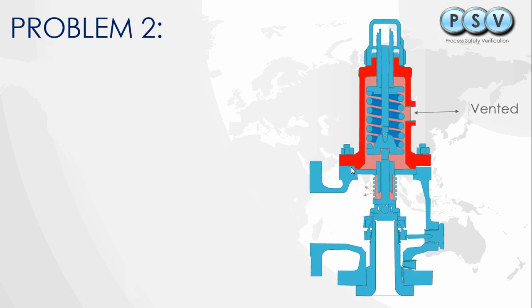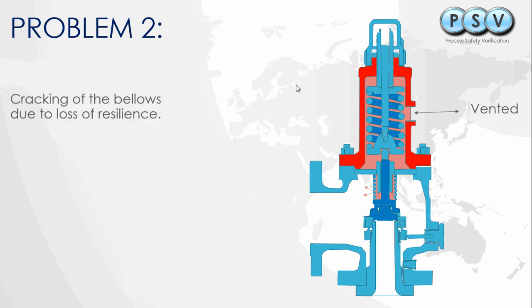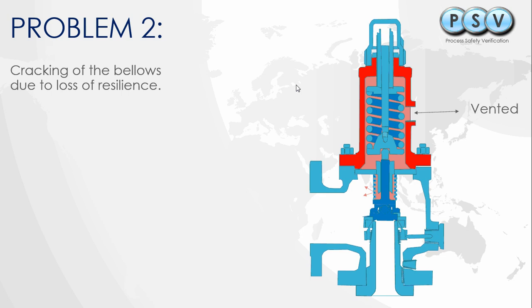The second problem may arise from attempts to tackle the first. One option is to provide heating and insulation for the valve — particularly the bellows and upstream part — so that ice can't form. However, cold still transfers through the mechanism to the bellows, either through conduction through the material or when the relief valve opens and very cold material is released.